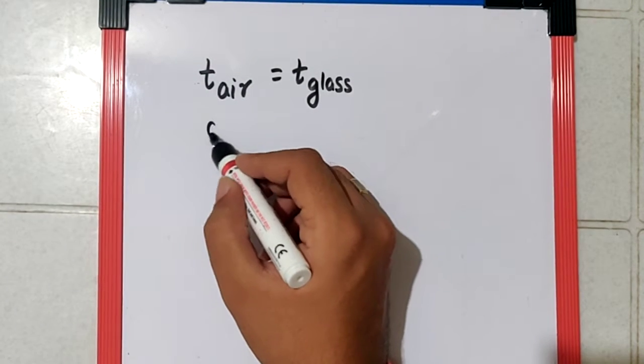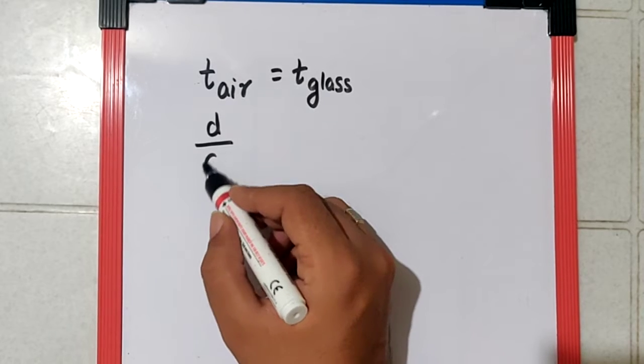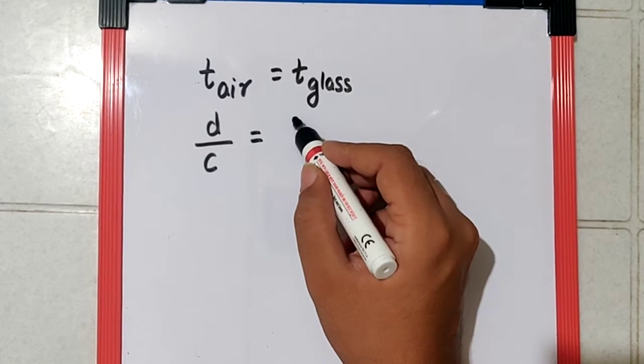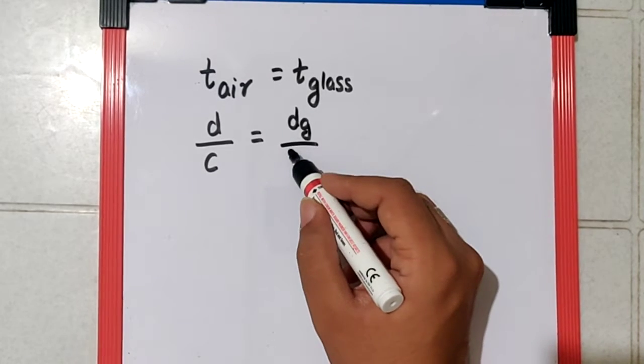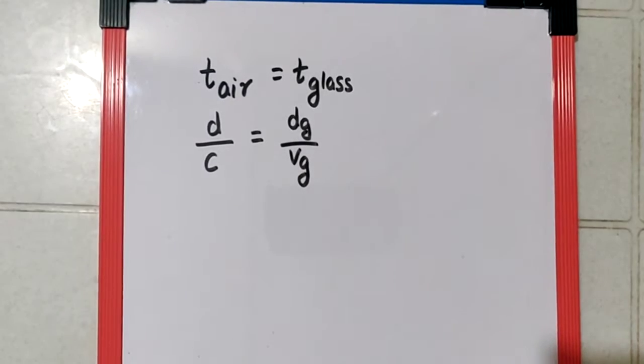That means this distance they are asking for upon the speed of light in air equals the distance covered in glass. Let's call it as d_g upon speed of light in glass, v_g.